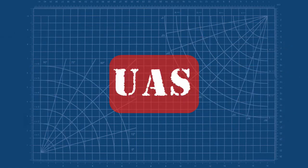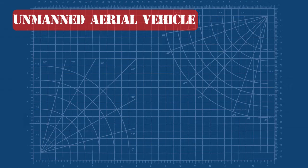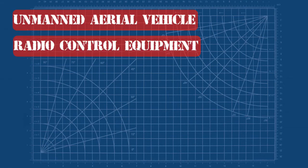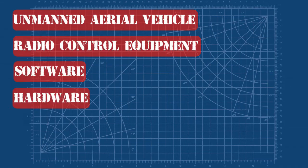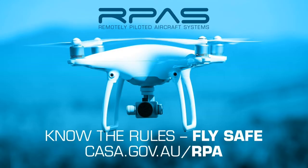And it is this term that we shall use to describe the air vehicle and the control equipment. To recap, a system that consists of an unmanned aerial vehicle, radio control equipment, software, hardware, and onboard payload such as cameras or weapons, is known as an unmanned aerial system, or UAS. In Australian Civil Aviation, the term remotely piloted aircraft system, or RPAS, is used.